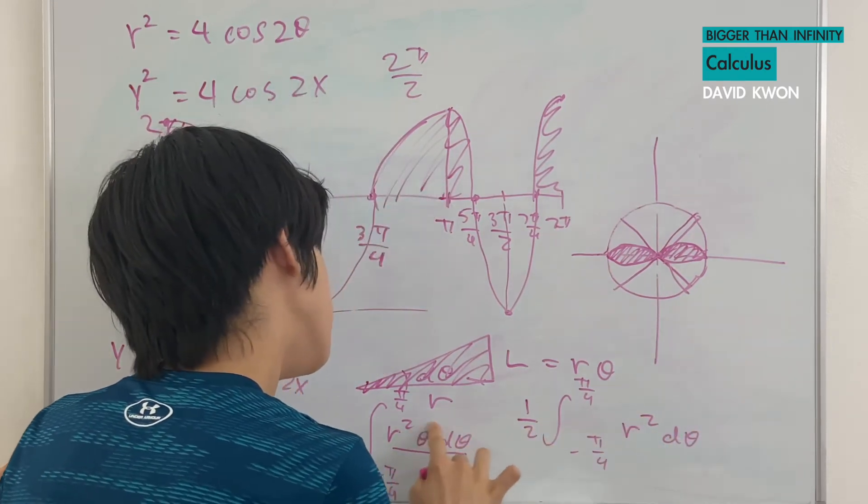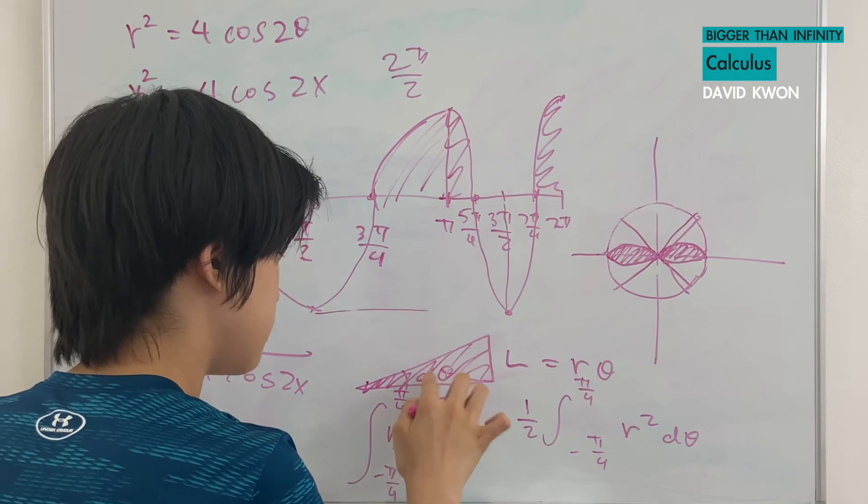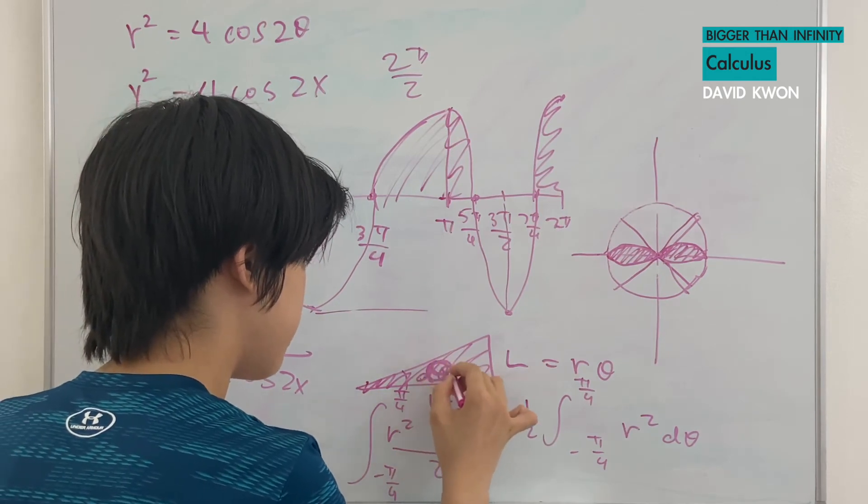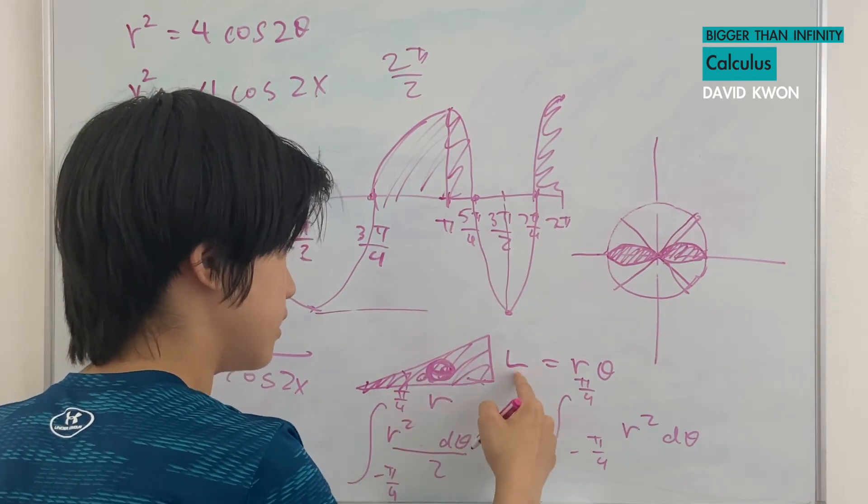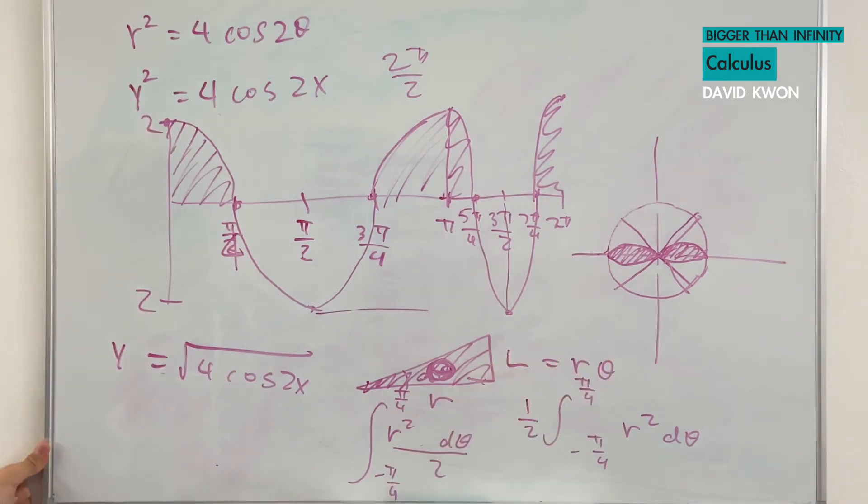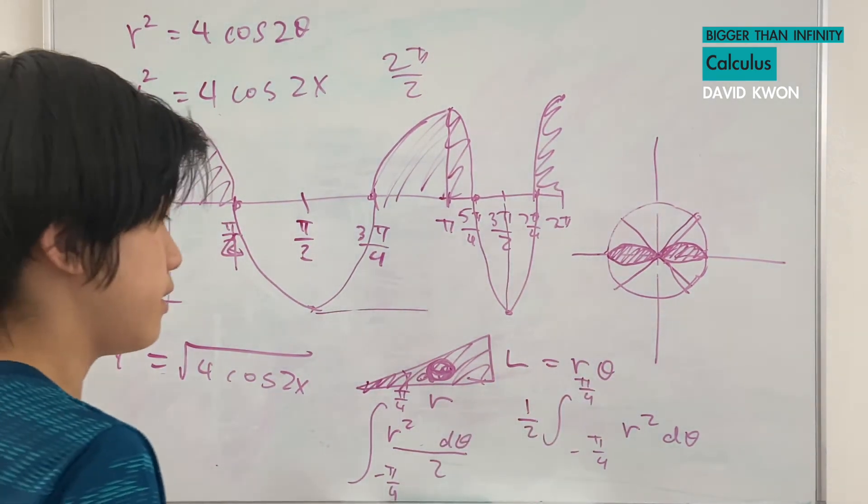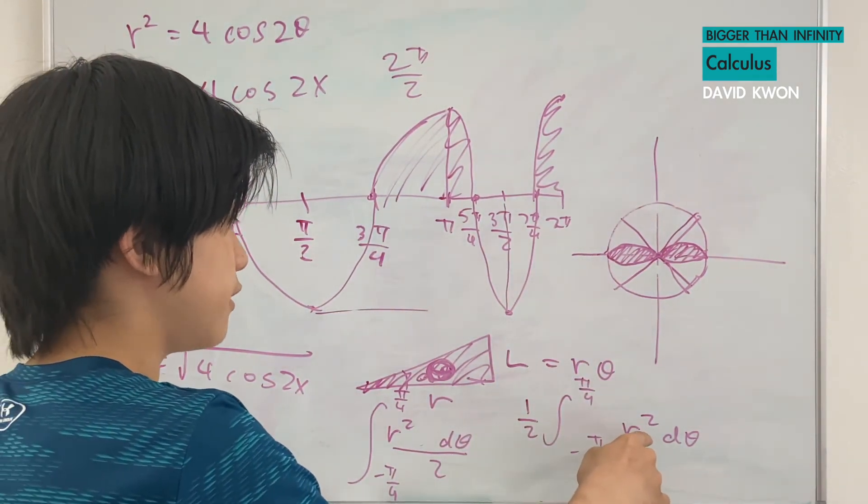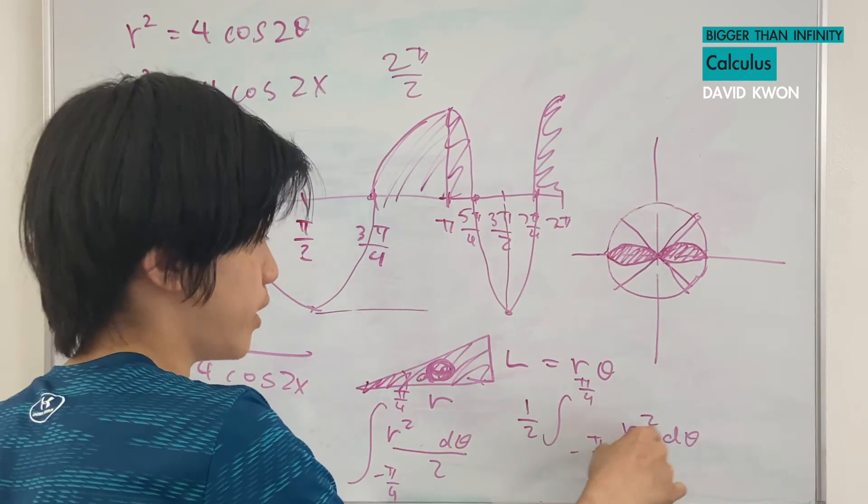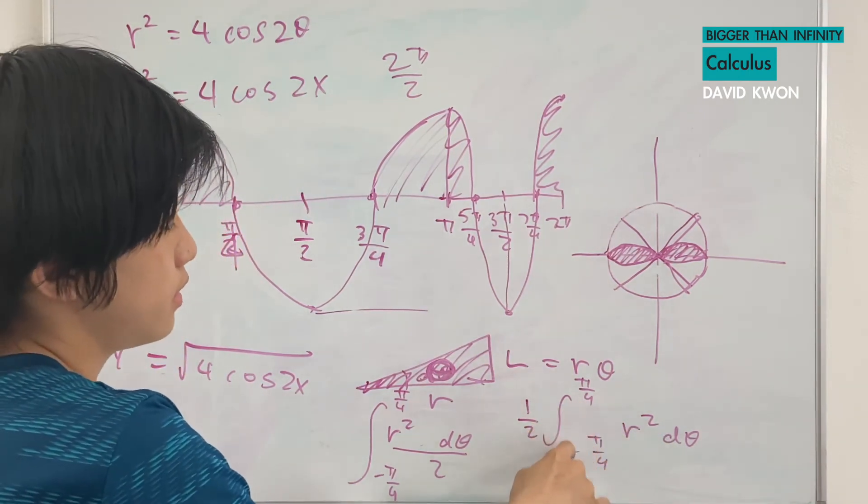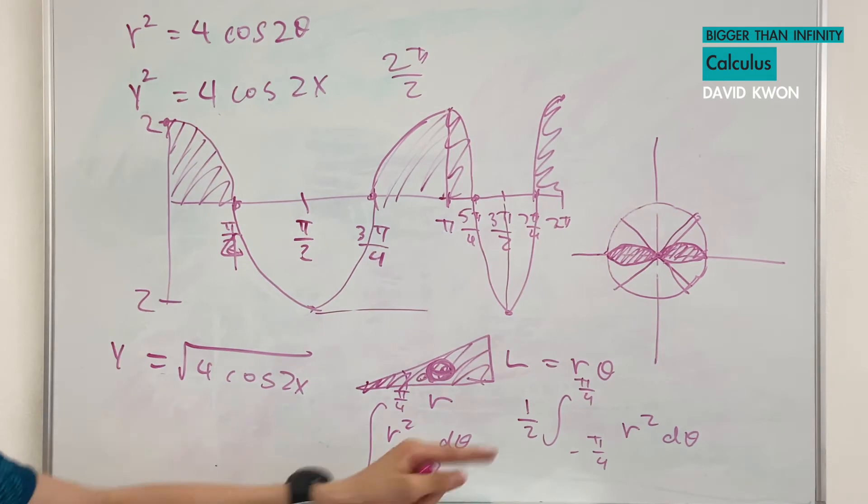And this is the r squared dθ. Oh, oops. There shouldn't be a θ because this is supposed to be a θ. Right? And l is r times θ because they are proportional to each other. And I just differentiated θ so I get dθ because the interval has to be in terms of θ.